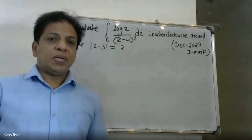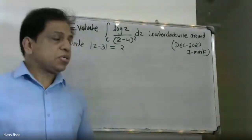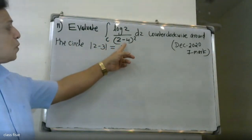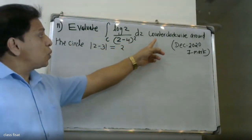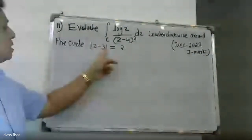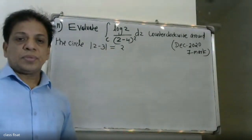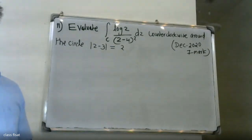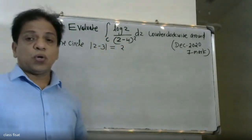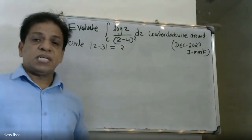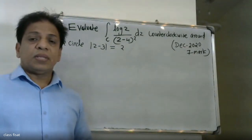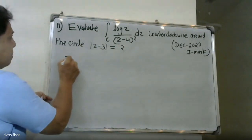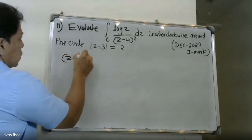Evaluate the integral of C: log(z) divided by (z minus 4) squared dz, around the circuit where the modulus of z minus 3 is equal to 2. We need to integrate this function. Note that (z minus 4) squared equals zero, so z minus 4 equals zero, therefore z equals 4 is the singularity.